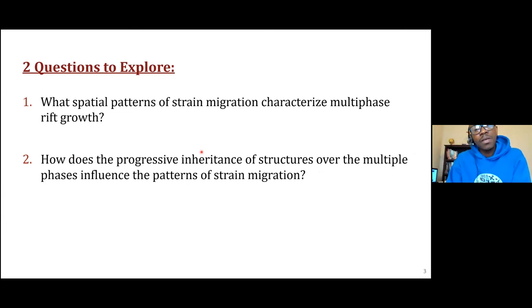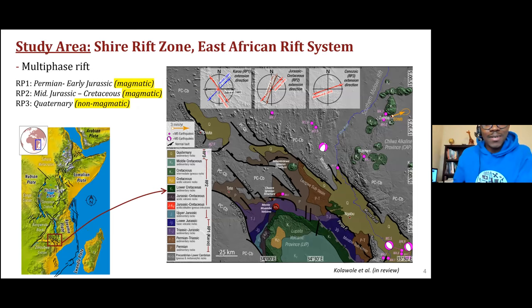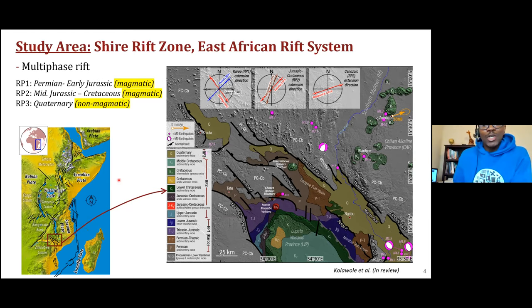Our study area is the Shiree Rift Zone, and we addressed these two questions in the Shiree Rift Zone, East Africa. This basin is actually one of the least understood segments of the East African rift system. It is located just south of the Malawi Rift, and although it is a very young rift, it has experienced all three phases of extension recorded in Eastern Africa. The first phase was in the Permian to early Jurassic, which we call RP1.